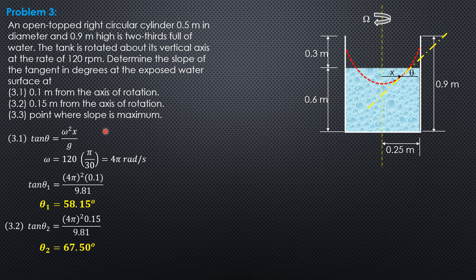Then for number 3, the point where the slope is maximum, it occurs at the intersection with the walls. Then x there is equal to big R, which is 0.25. So tangent of theta 3 equals quantity 4 pi squared times 0.25 over 9.81. So theta 3 or theta max is 76.05 degrees.